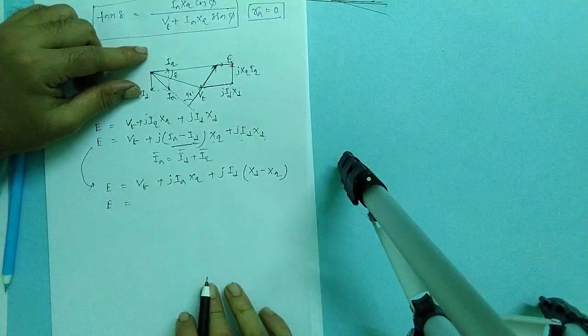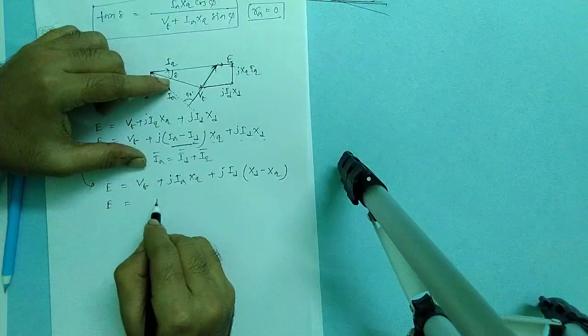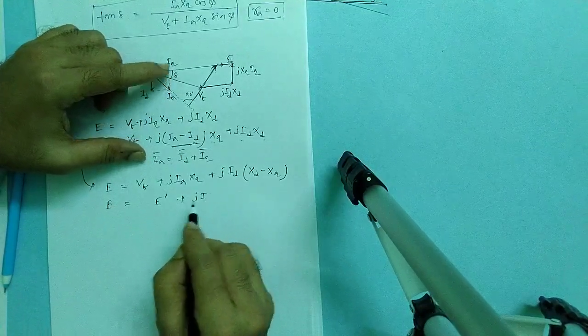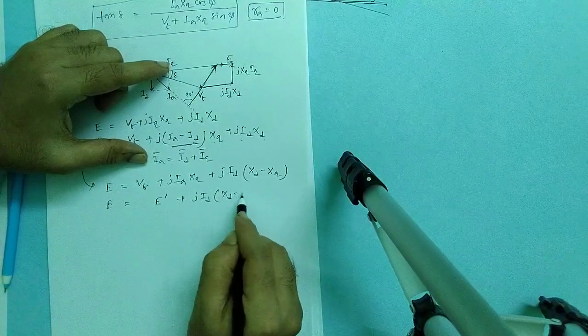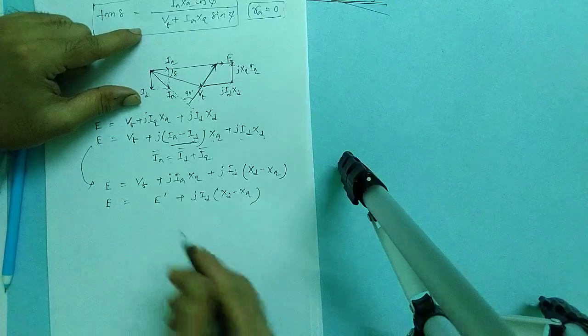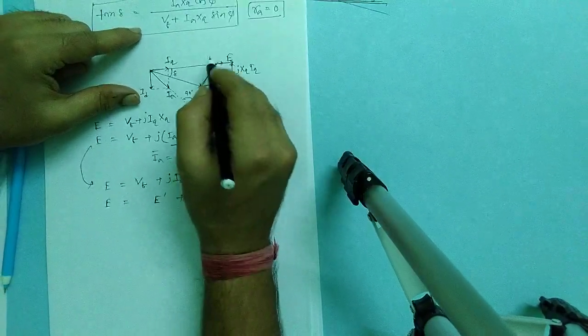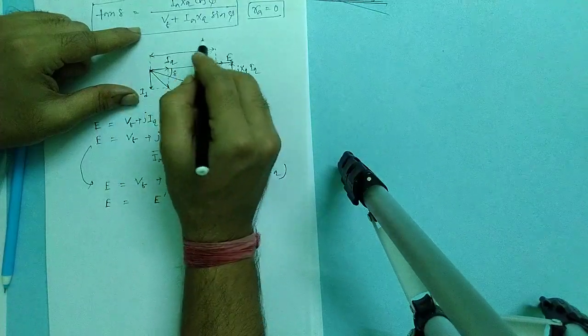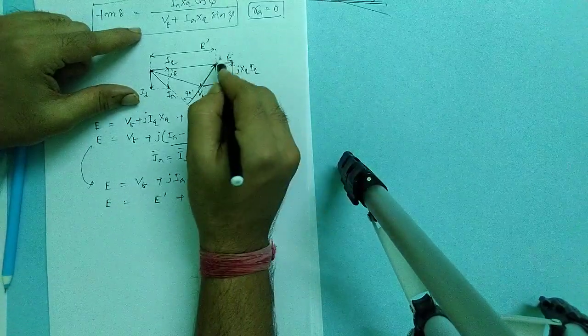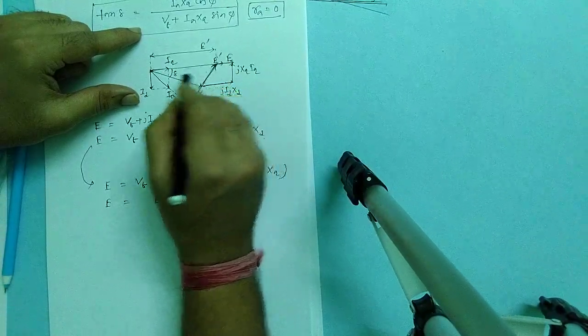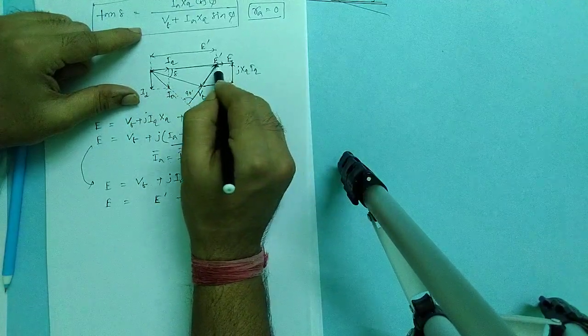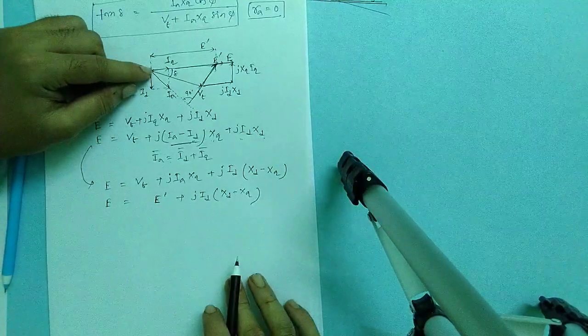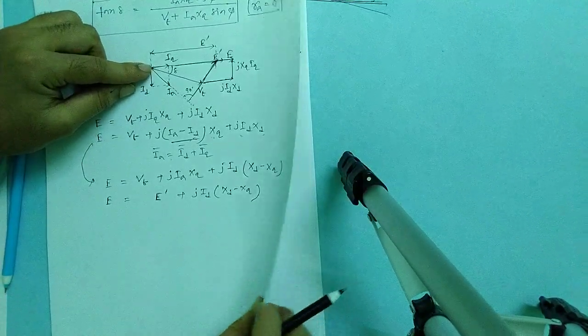So we can write it as E is E' plus J of i_d times X_d minus X_q. What is E'? E' is nothing but this length. This phasor is E'. This is E', and total induced EMF is this total.